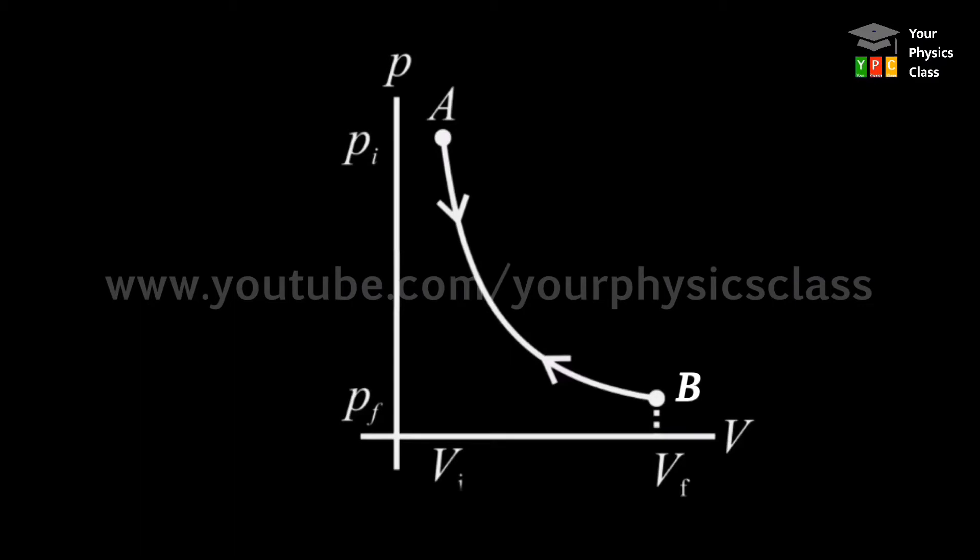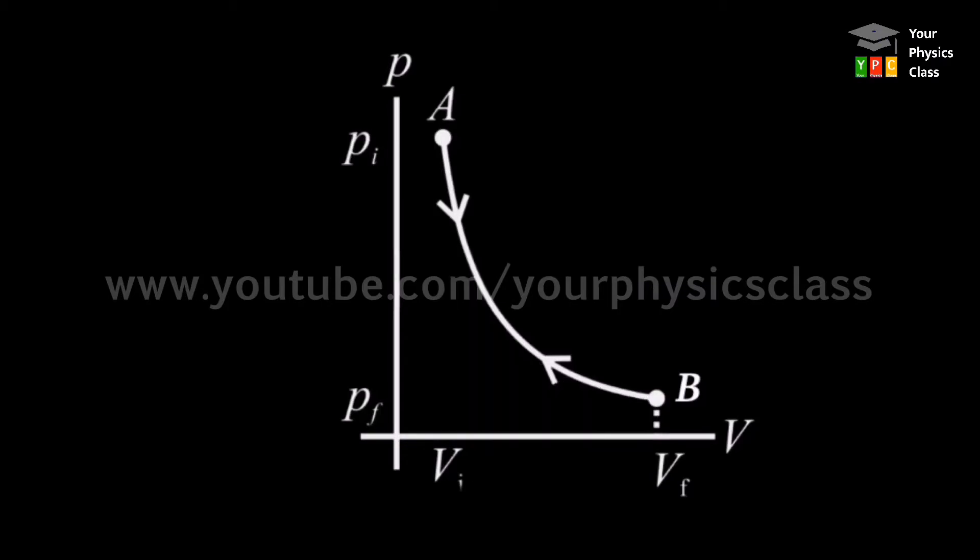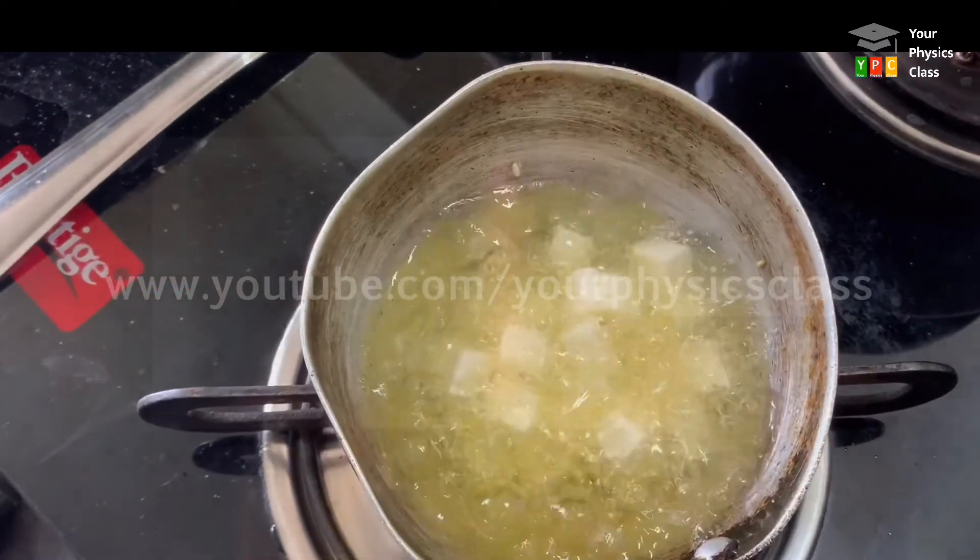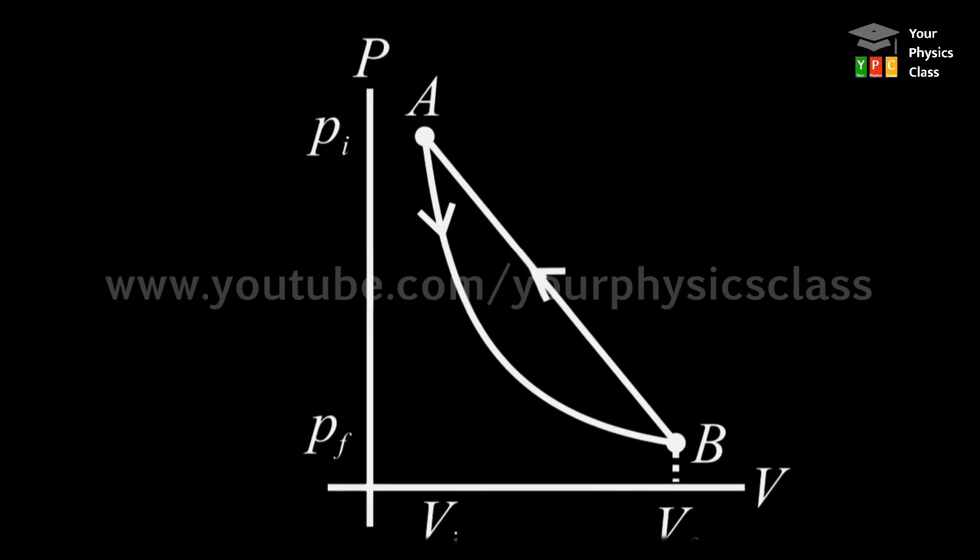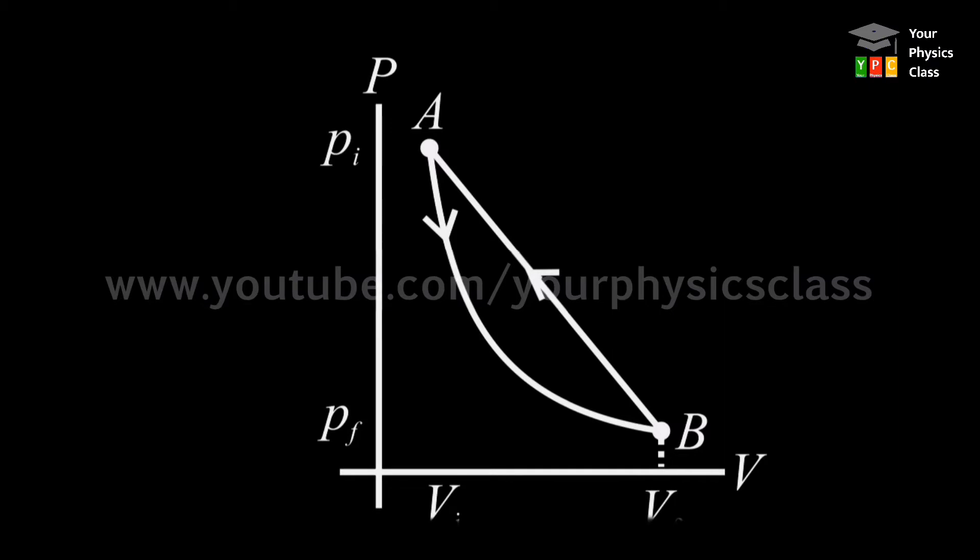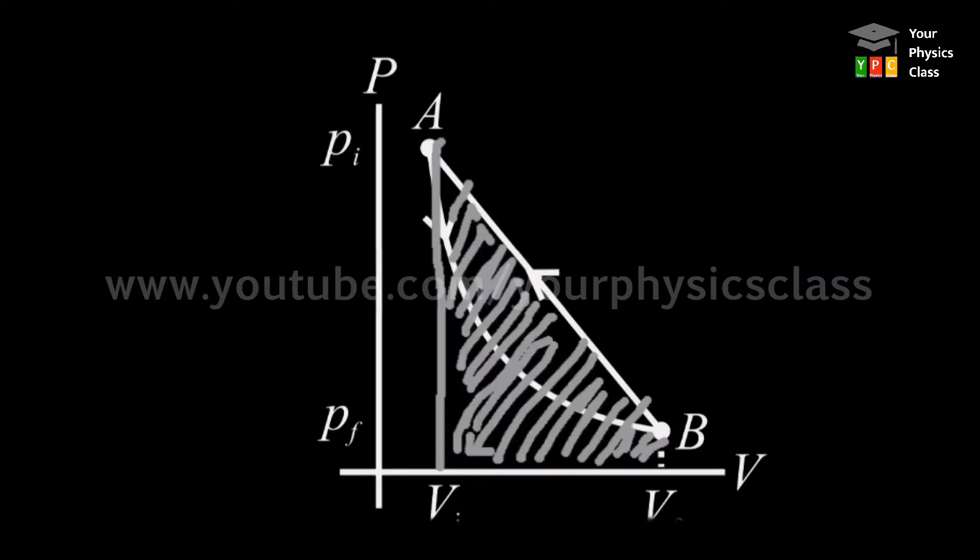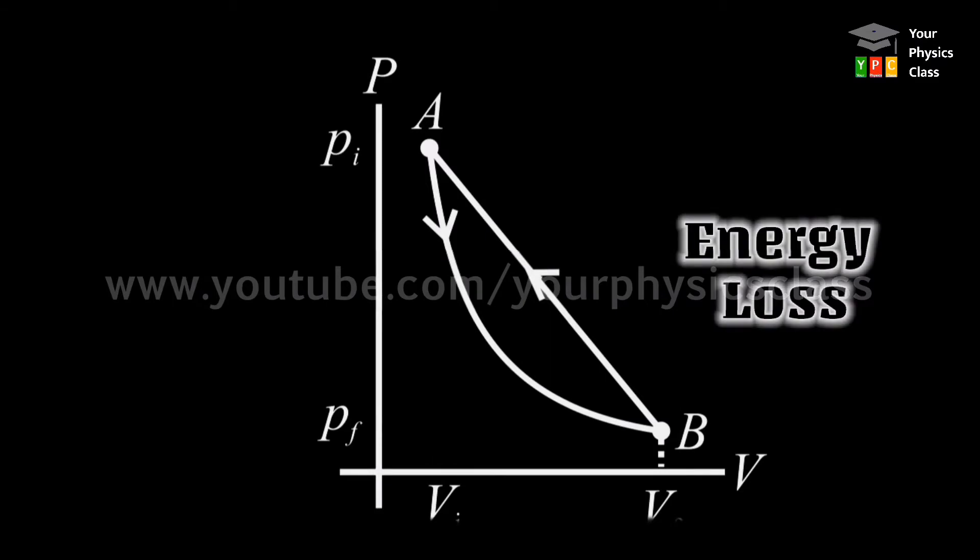Area under the graph from A to B and B to A are same, showing no loss in energy. But a real thermodynamic process will always encounter some loss due to friction or some other dissipative forces. The PV diagram for irreversible process is shown on your screen. Area under the path A to B and B to A are different, showing energy loss in the process.